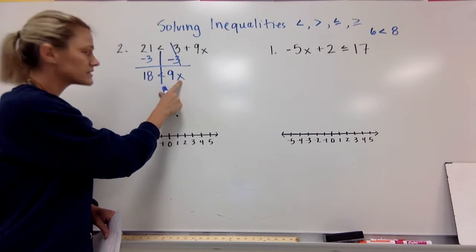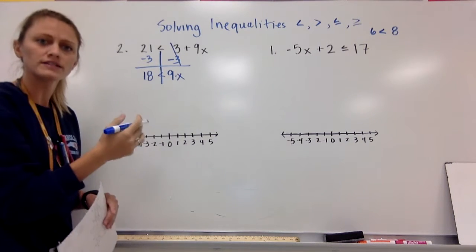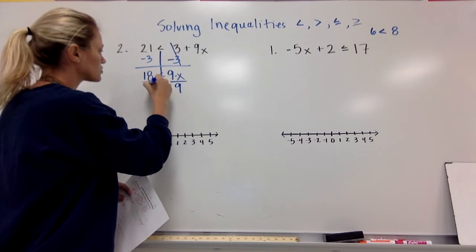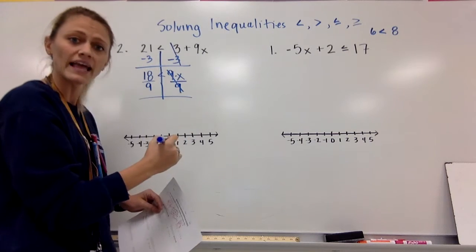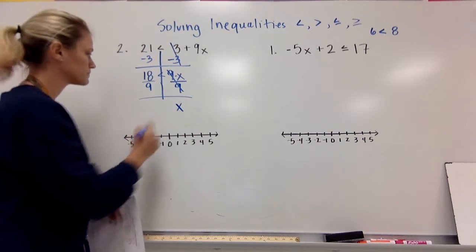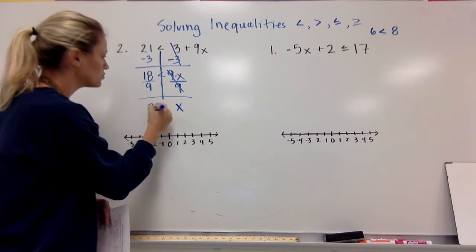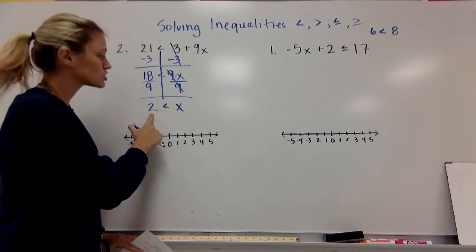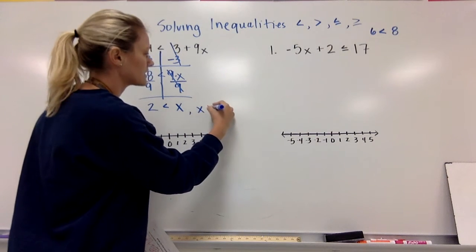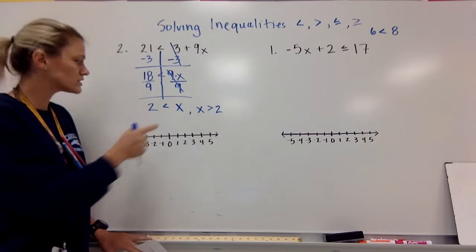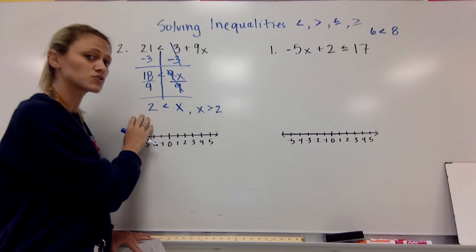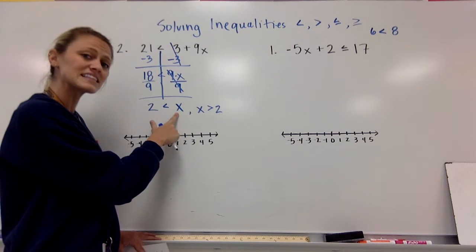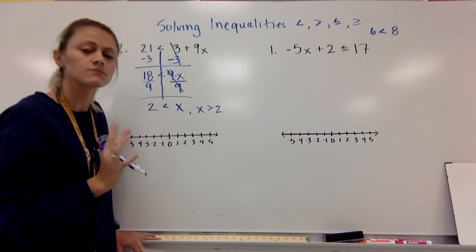I need my x by itself. The 9 and the x are being multiplied, so in order to move the 9 over, we've got to do the opposite of multiplication, which is to divide each side. My 9s will cancel, leaving me with x. 18 divided by 9 is 2, and I'll bring down my symbol. So what this means is 2 is less than x, or x is greater than 2. You can flip this around — most of you like the x on the left side. As long as the alligator mouth opens toward the x, it means the same thing. You can have 2 is less than x, or x is greater than 2. They mean the same thing.